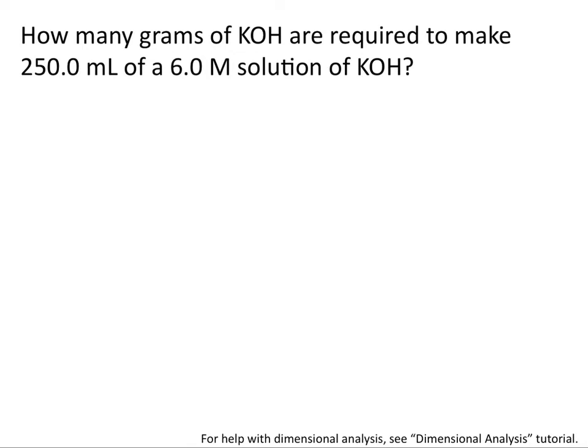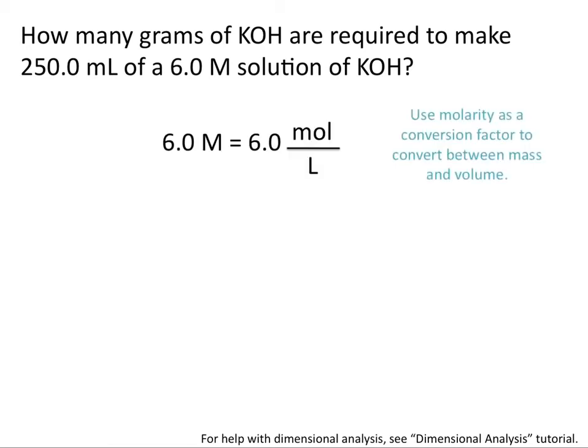Now molarity, although we've abbreviated it with a capital M, means moles per liter. And so we'll use this value as a conversion factor to convert between mass and volume. Let's start our problem by writing 250 milliliters. Now the conversion factor that we're given, 6.0 molar, is moles per liter. So if we want to use this conversion factor, we first need to convert 250 milliliters to liters.